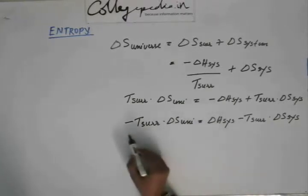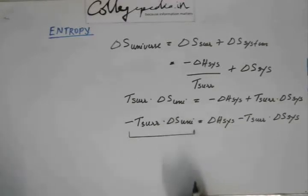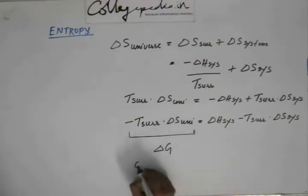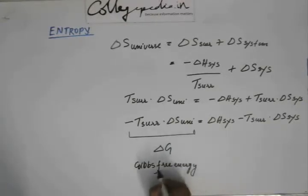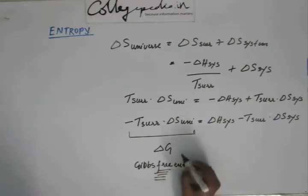This expression — minus T_surrounding times ΔS_universe — Gibbs named as ΔG, where G is Gibbs free energy. Gibbs worked on it, so it is called Gibbs free energy. What 'free' means here, we will discuss later. For now, know the name: G is Gibbs free energy and ΔG is the change in Gibbs free energy.